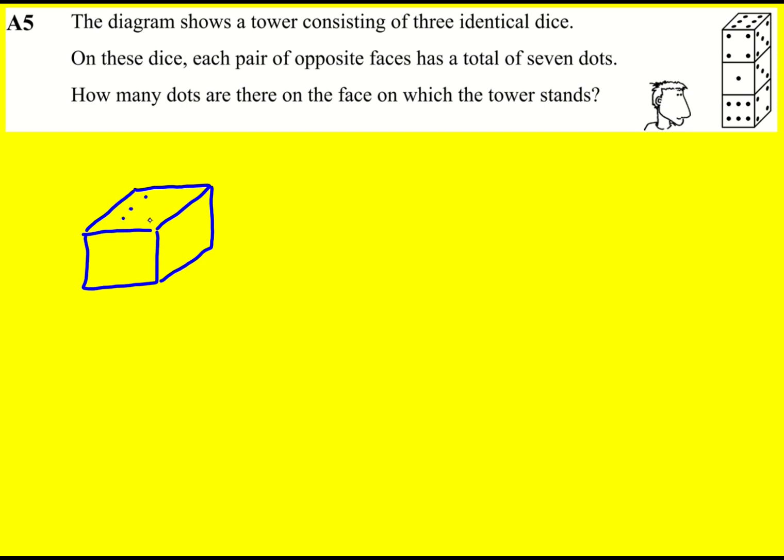We've got six pips here, and then four, and then five. Remember, the dice are all identical, so basically this dice has just been put into a different orientation on the bottom.